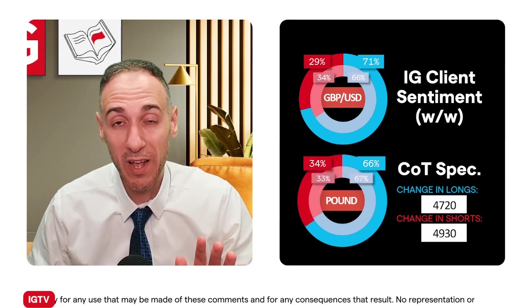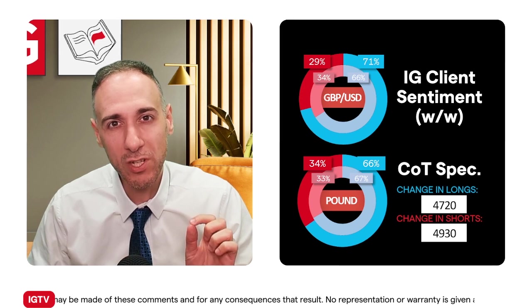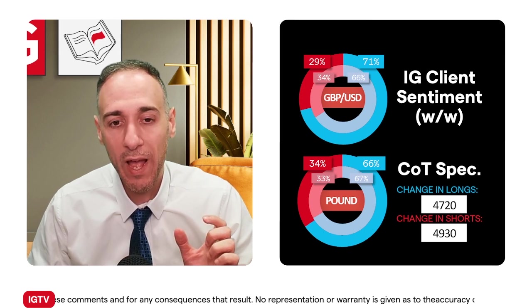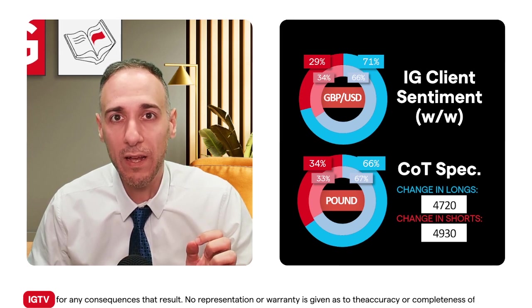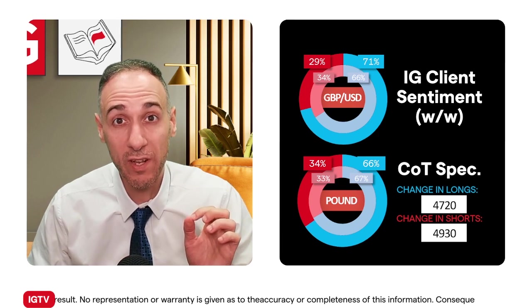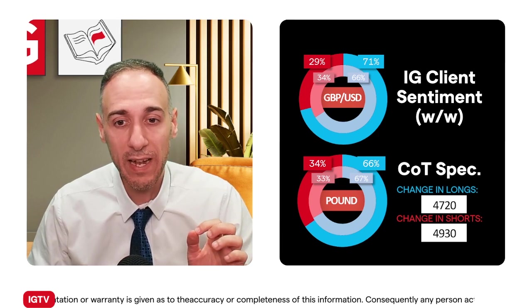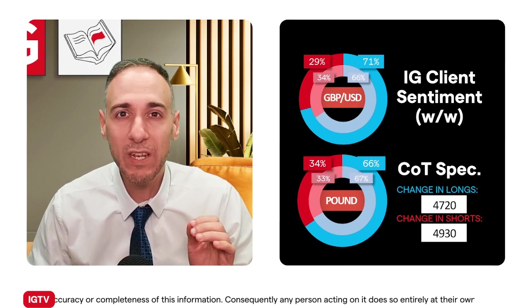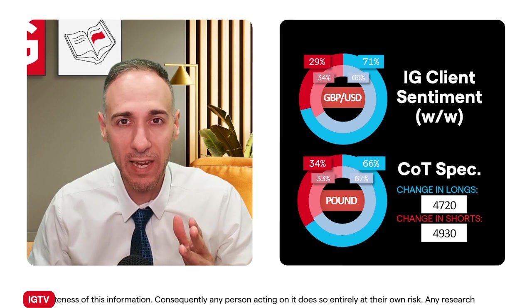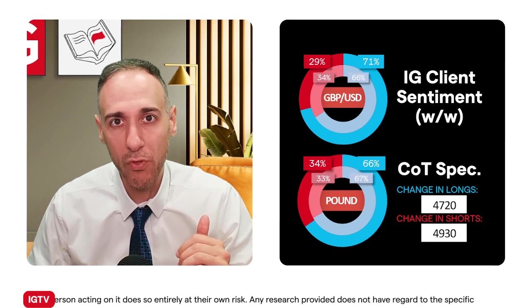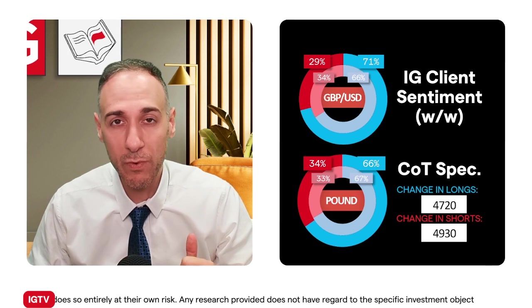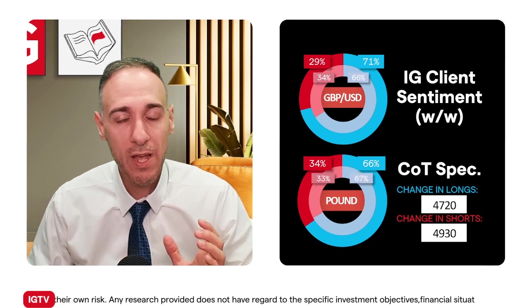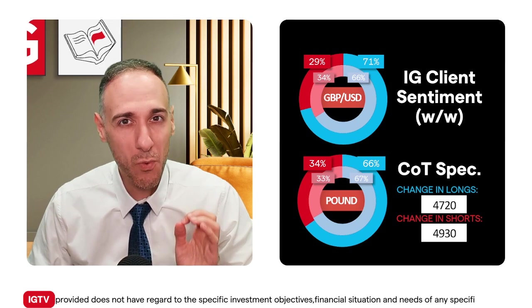When it comes to COT speculators and institutional sentiment, they're also majority buy, also in heavy buy territory, but they have been pulling back slightly. The inner circle is from the week before; the outer circle is for last week from the CFTC release on Friday, positioning as of last Tuesday. The pullback wasn't due to a drop in longs — longs actually increased — it's because there was an even larger increase in shorts, taking it from 67% to 66%. So both IG client sentiment and COT speculators are in the same direction: majority buy bias prior to the event.